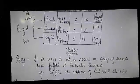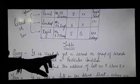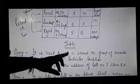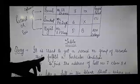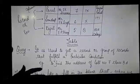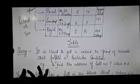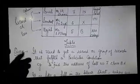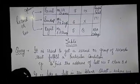Now we have query. It is used to get a record or a group of records that fulfill a particular condition. For example, I want to find the address of roll number 7, class A. So this is going to be a query.